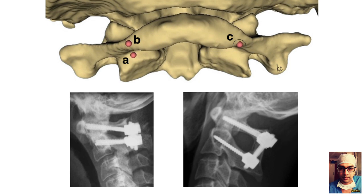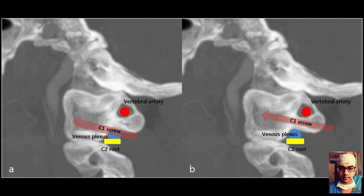Alternative entry points include notching the posterior arch to shift the entry point slightly superior, or passing a screw directly through the posterior arch into the lateral mass — as seen on X-ray. This requires the posterior arch to be of sufficient thickness. Passing a screw directly through the C1 arch avoids dissecting the venous plexus and placing the screw close to the C2 ganglia.